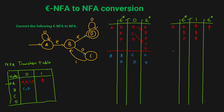For state B on input 1, we copy the Epsilon closure which is B and D. In state B, if you get input 1, it's not mentioned, so phi. In state D, if you get input 1, it's not mentioned, so phi. The Epsilon closure of phi is phi. So for state B on input 1, the answer is phi.